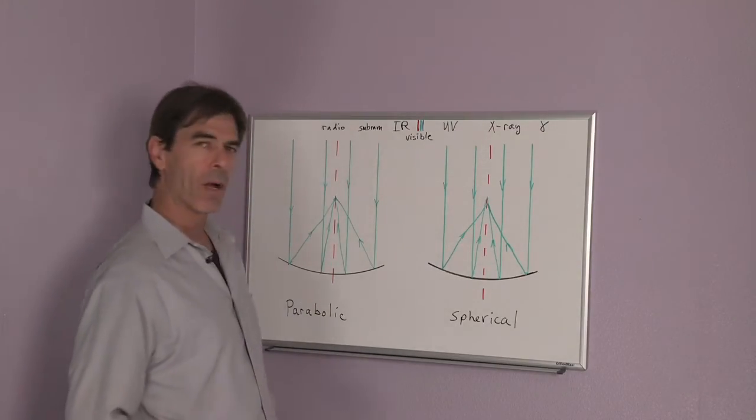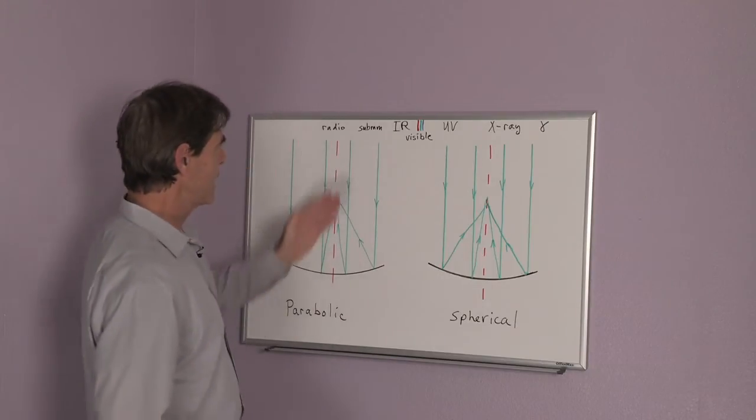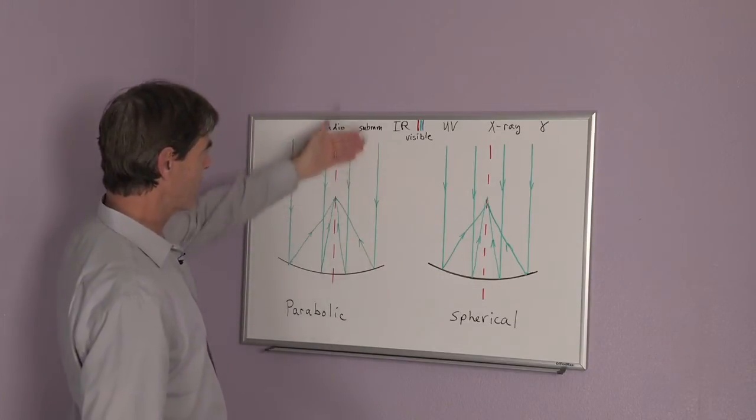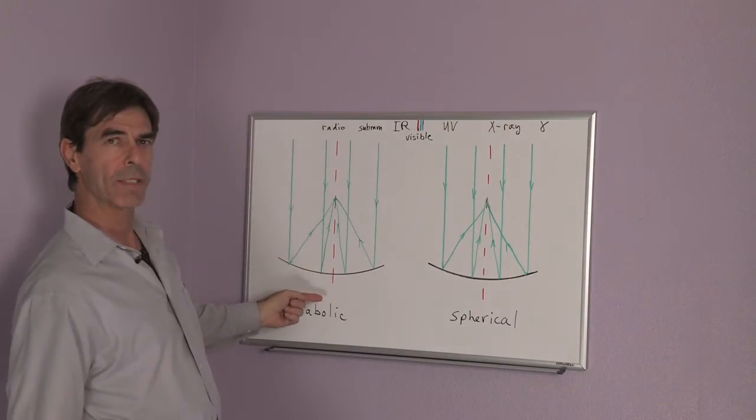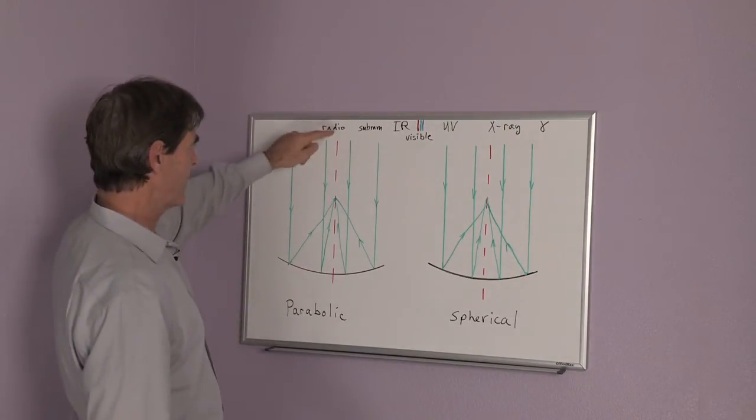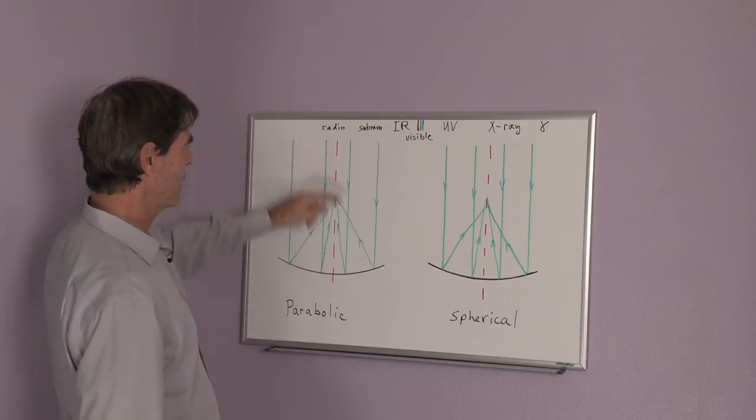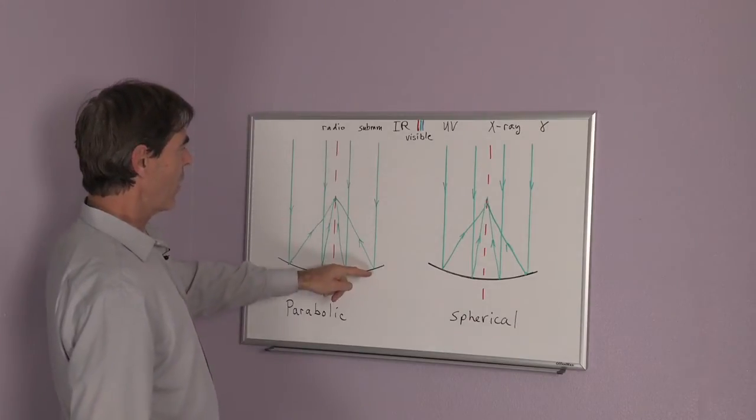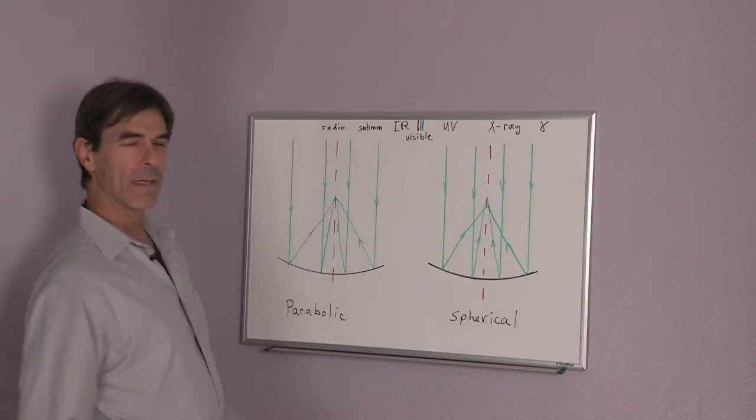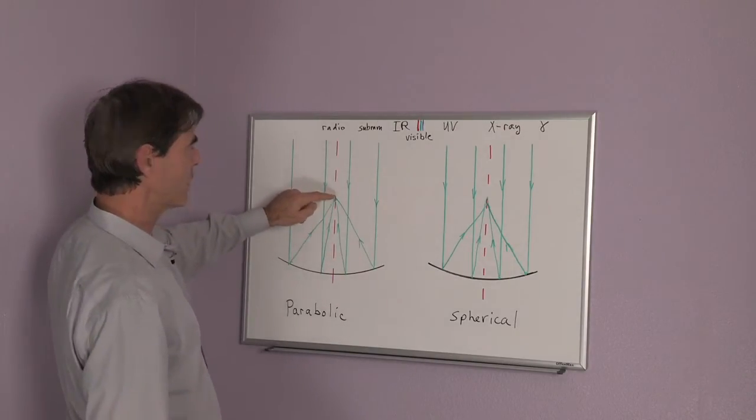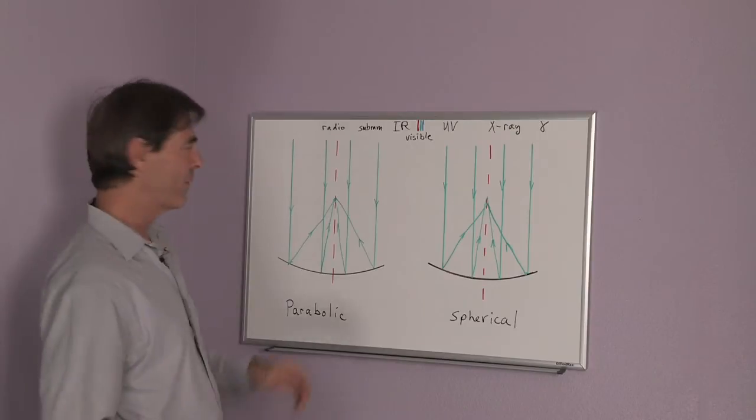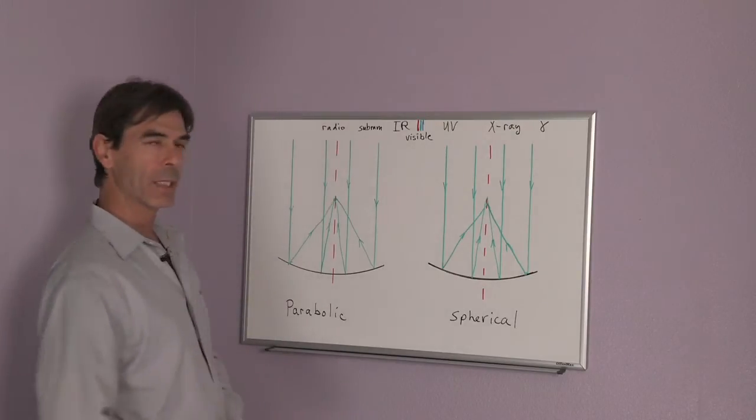The advantage of the parabolic mirror is if your light is coming from a star and it's parallel to the so-called optical axis, which I've drawn in red, then all of the light rays will indeed focus into one single point and you have the sharpest object possible.